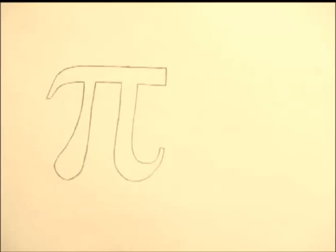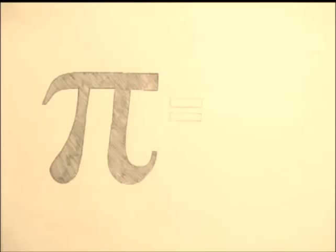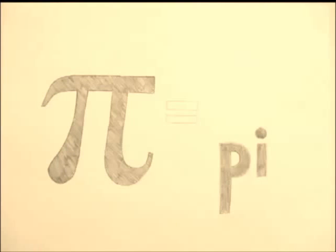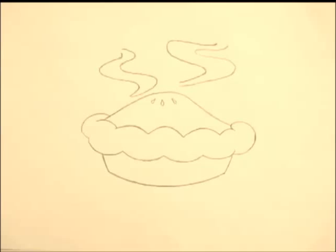But listening in, I come to realize that the weird squiggly symbol was called pi, spelled P-I, and was what caused my sudden craving for sweets earlier.